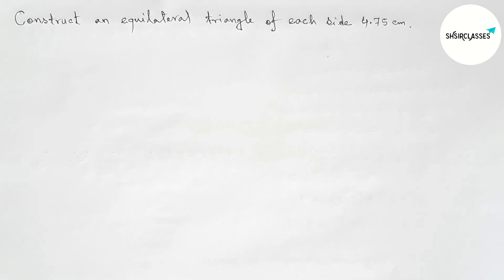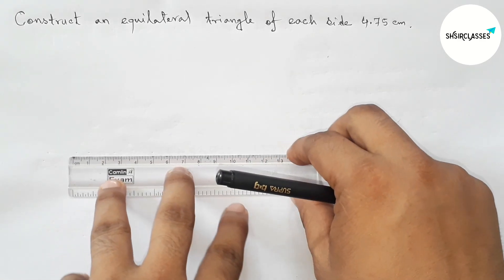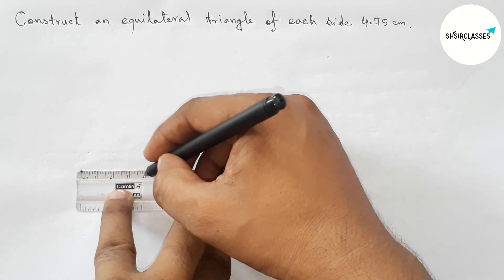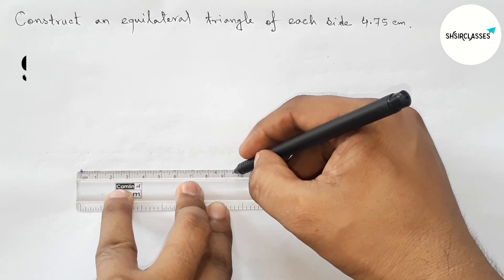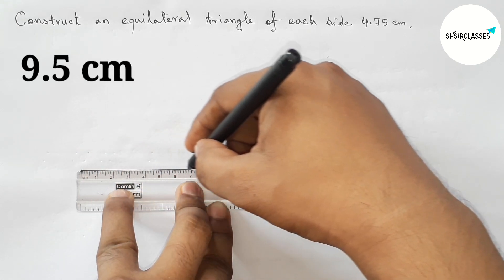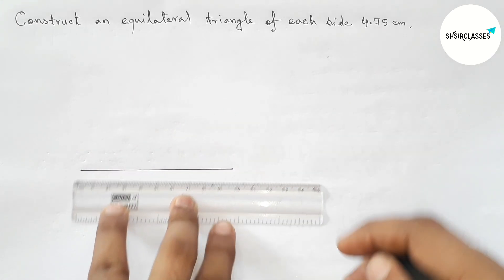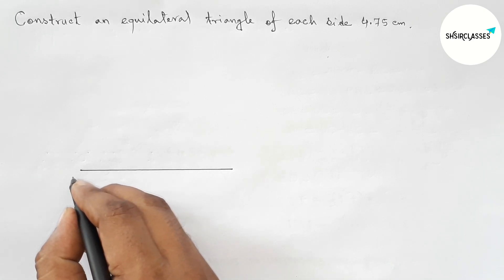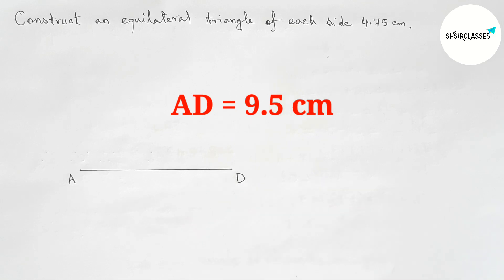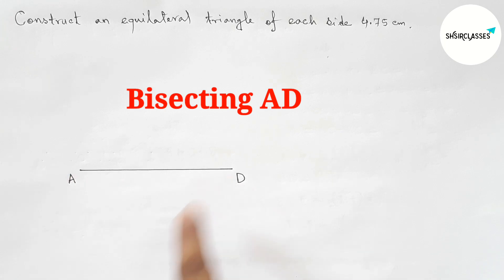First of all, let us draw here a line segment of length 9.5 centimeter. So here this is a 9.5 centimeter line segment. Perfect. Now labeling here point A and here D, so AD equals 9.5 centimeter. Next, bisecting the line AD.